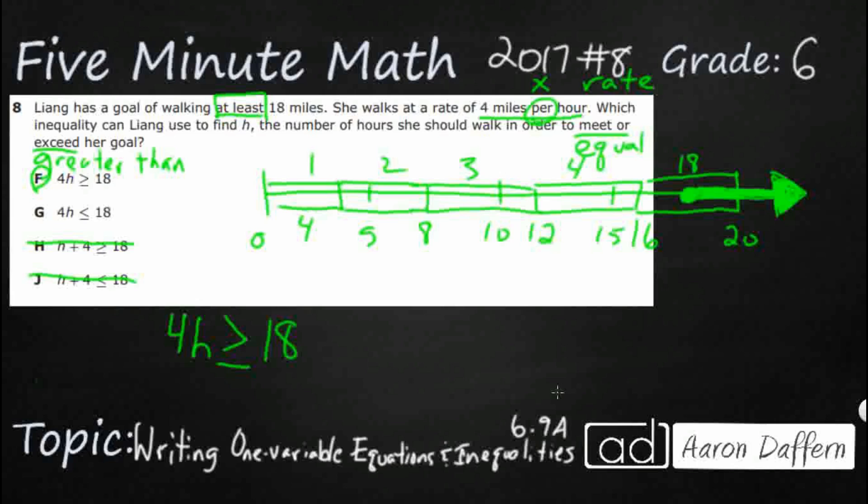So if we take a look at that, we want to know actually what it is. All we need to do is we need to divide by four and we're going to say h is greater than or equal to 4.5. She needs to walk four and a half hours to meet or exceed her goal. The answer is F.